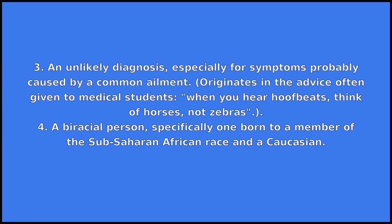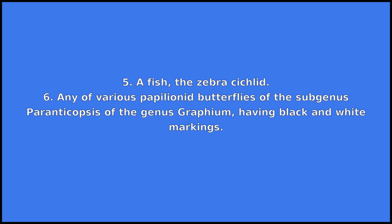4. A biracial person, specifically one born to a member of the sub-Saharan African race and a Caucasian. 5. A fish, the zebra cichlid. 6. Any of various papilionid butterflies of the subgenus Paranticopsis of the genus Graphium, having black and white markings.